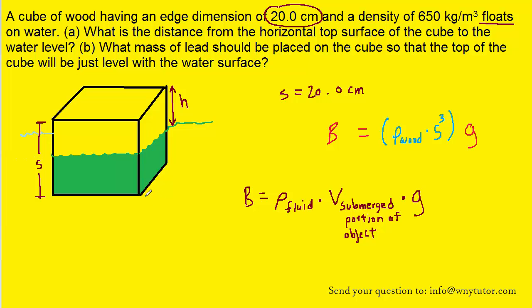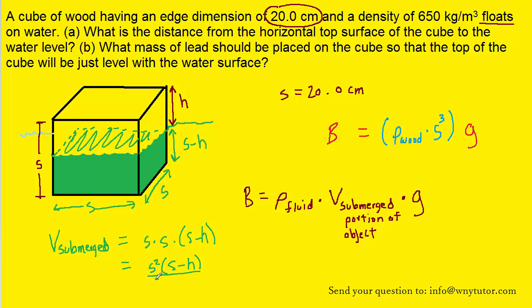We've colored it in green so that it stands out. The length this way would just be s, the side length of the cube. The length this way also would be s. But notice that the length right here is actually s minus h. So if you calculate the volume of this submerged portion, it's basically a box-shaped volume. The volume would be s times s times (s minus h), which can be simplified to s squared times (s minus h). This will be the expression for the volume of the submerged portion.